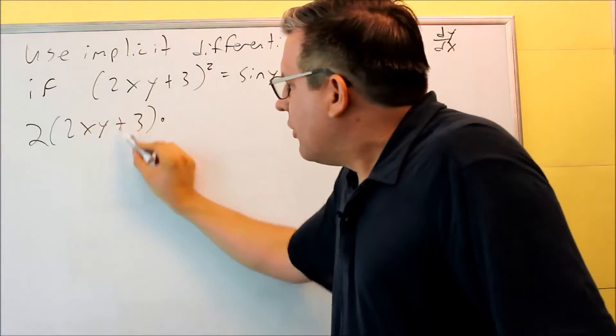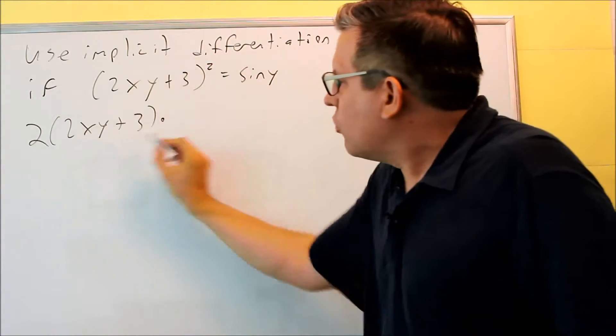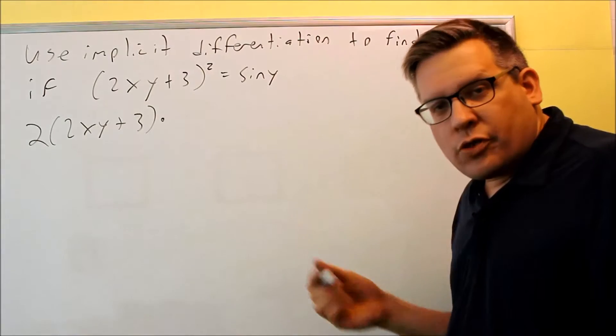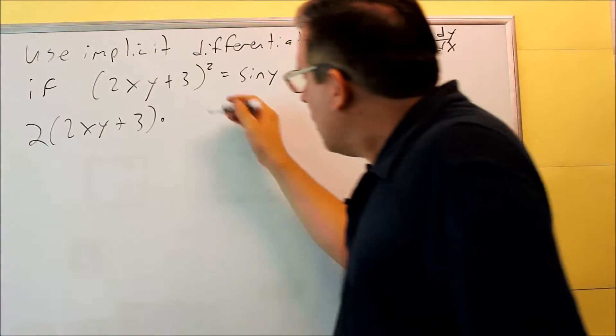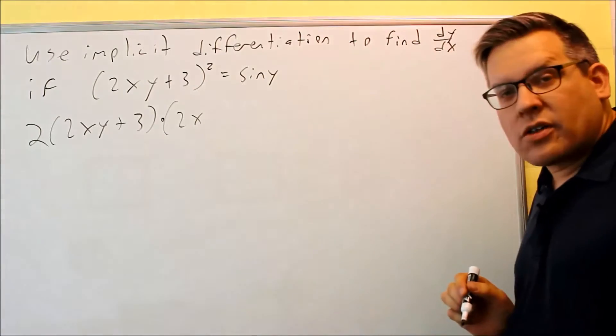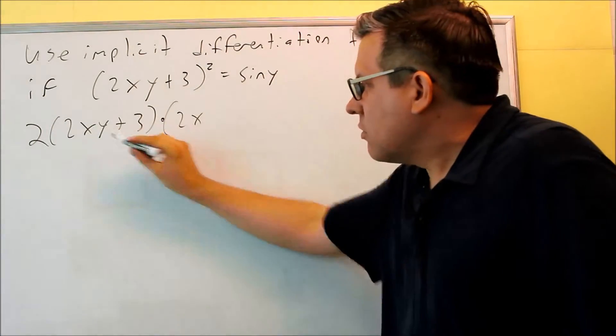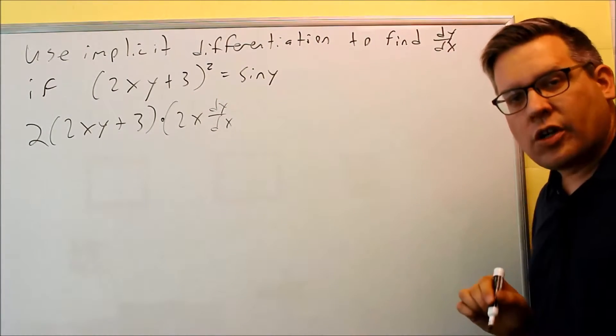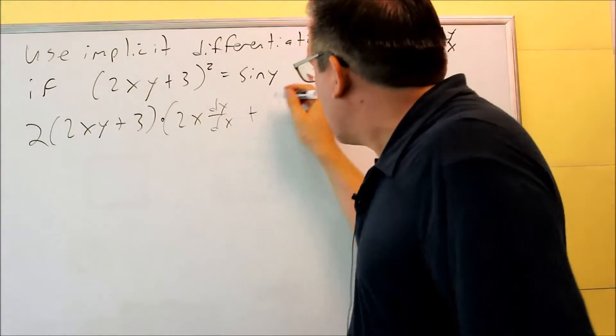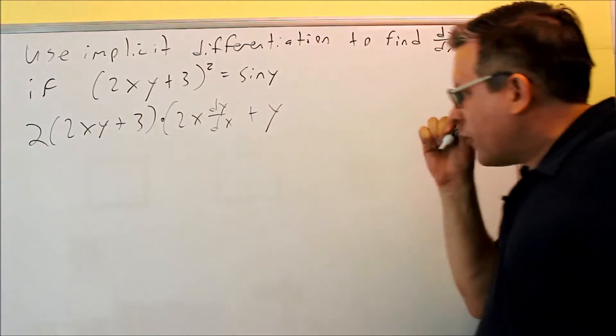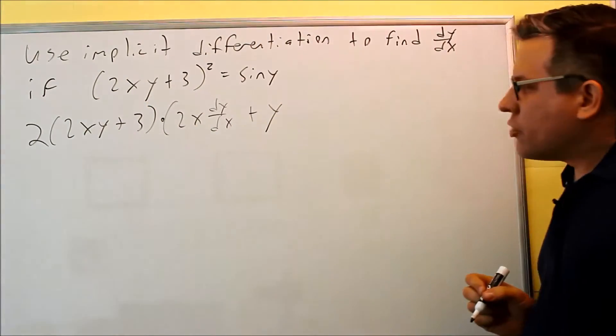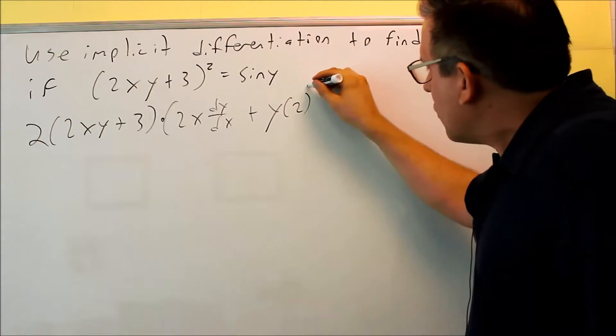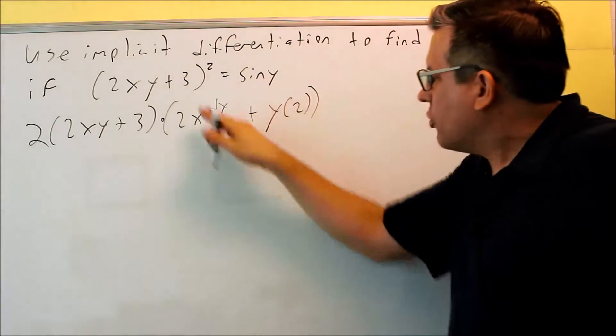So let's just focus on this part. We've done the outside, we brought the 2 down, we have this part, but now we have to do the derivative of the inside, which we'll do the derivative of 2xy, requires the product rule. We're going to do the first thing. We have 2x times the derivative of the second. The derivative of y is dy/dx. Whenever you have a y by itself, the derivative is dy/dx. Plus the second thing, plus the y, times the derivative of the first. In this case, the derivative of the first term, the derivative of 2x is just going to be 2. So that's what you get when you do the derivative of the inside.